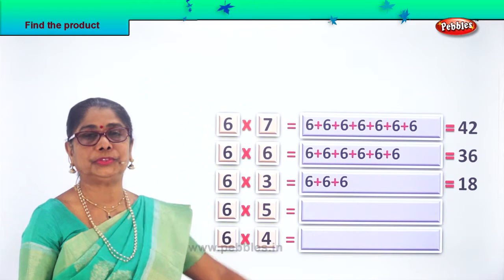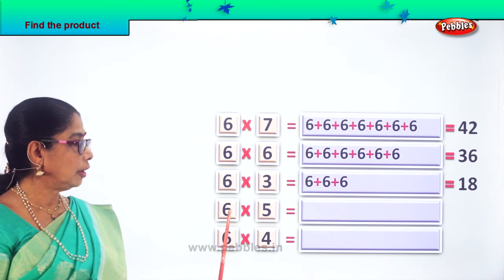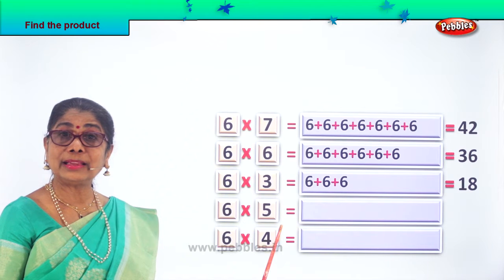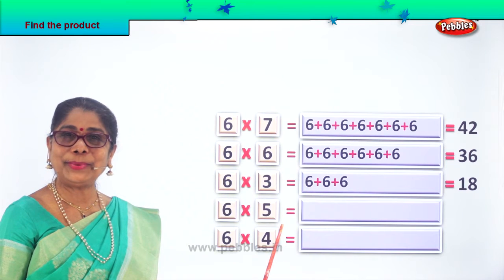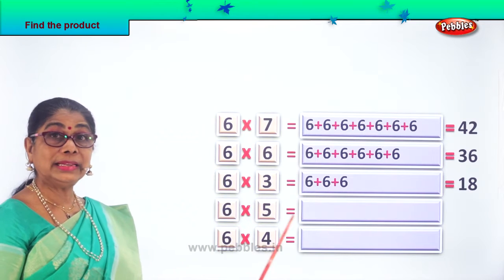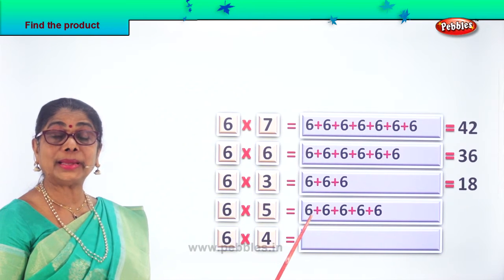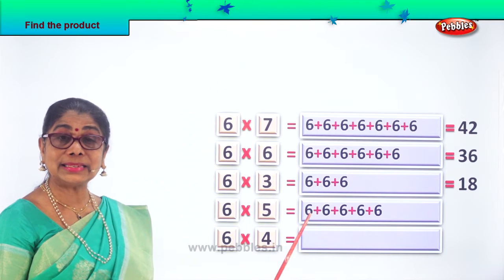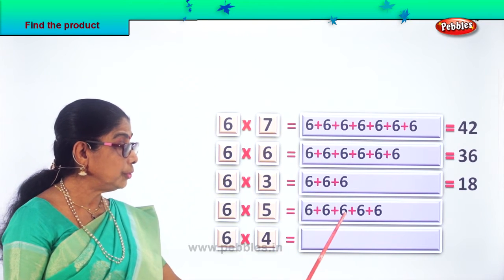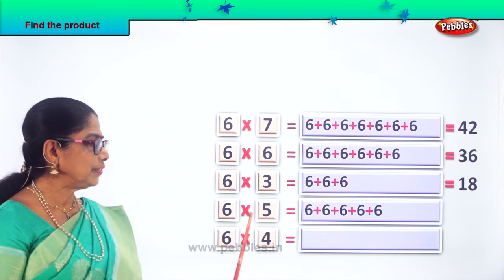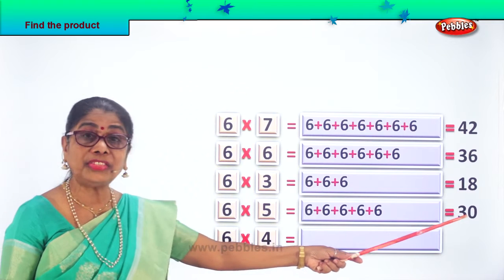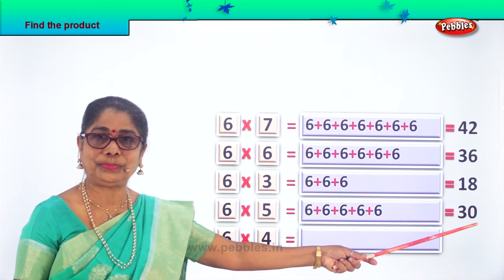Did you enjoy? Next, find the product of 6 into 5 using repeated addition. Are you enjoying the multiplication? What is 6 into 5? 6 five times: 6 plus 6 plus 6 plus 6 plus 6 — that's 5 times, 1, 2, 3, 4, 5. What is 6 fives? 6 into 5 is 6 fives — answer 30.